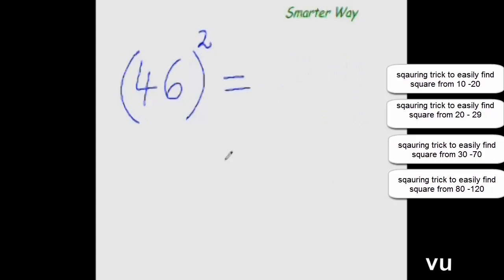Let's take one more example of number less than 50. Now as you can see that 46 is 4 less than 50. So immediately subtract that 4 from 25. So 25 minus 4 is 21. And square of 4 is 16. So 16 that's your answer.